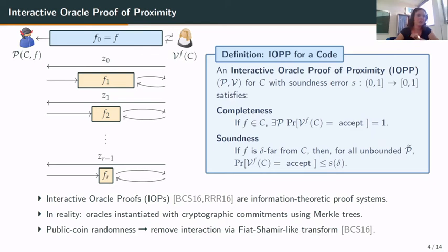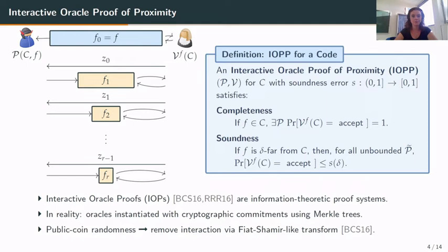We place ourselves in the interactive oracle proof model. In this model, the verifier and the prover have a kind of conversation. We start with input f, and the verifier sends a challenge z0 to the prover, who answers with a new function f1. This function can be accessed by the verifier via oracle access. The verifier sends another challenge, the prover answers with another function, and so on. Interactive oracle proofs are information-theoretic proof systems.